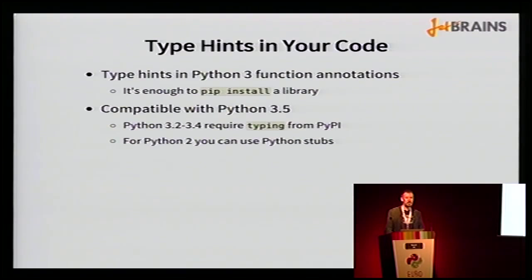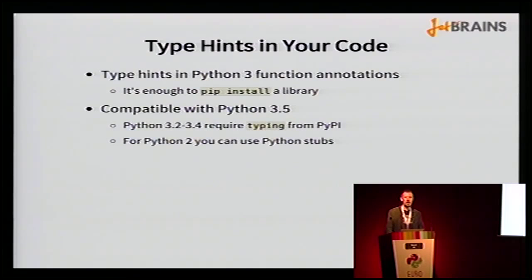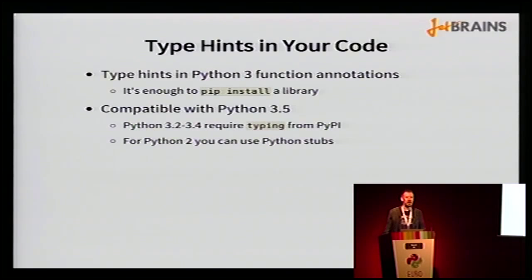We've seen type hints written using Python 3 function annotations. To use those annotations it's enough for the user to just pip install your library — the type annotations are in the code and available. This is also compatible with Python 2 and earlier Python versions if you install the typing module from PyPI. Right now you have to specify typing==3.5.0b1, otherwise you'll get just an empty package, because the library is very new.